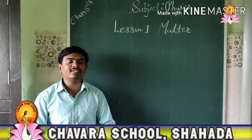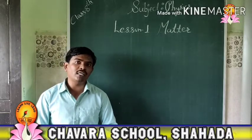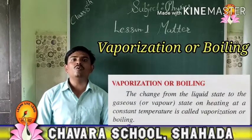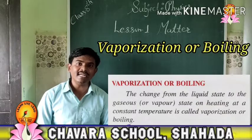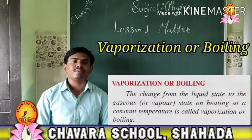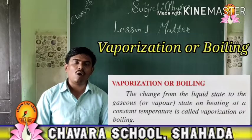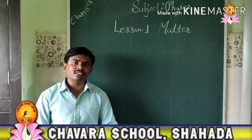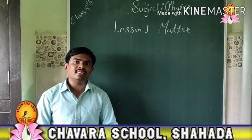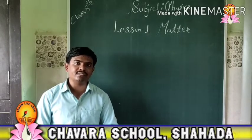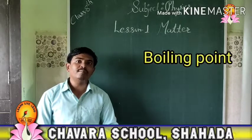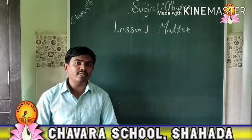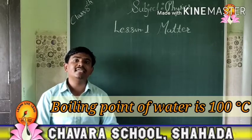Now the next definition: vaporization or boiling. The process of change of liquid state to gaseous state on heating at constant temperature is called vaporization or boiling. The temperature at which liquid state changes to gaseous state without further increase in temperature is called the boiling point or vaporization point. The boiling point of water is 100 degree Celsius.